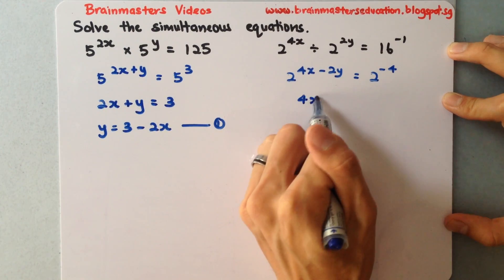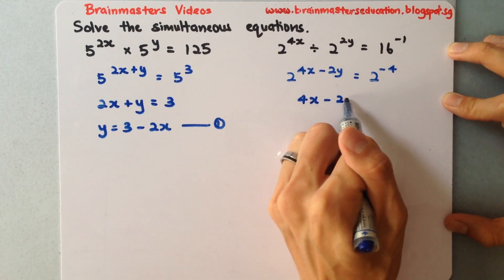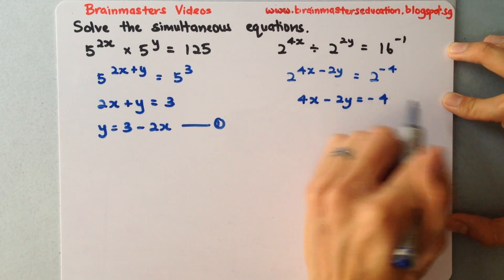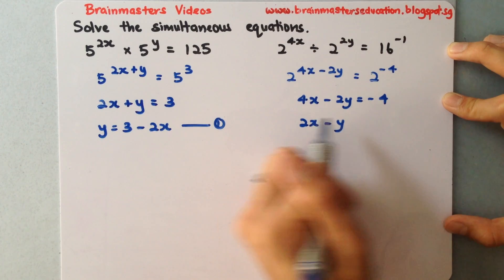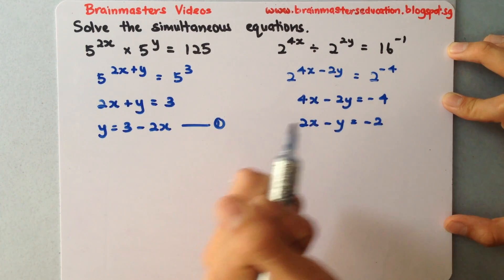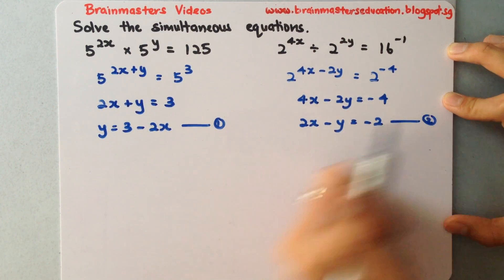So now I'll make this into an equation again. 4x minus 2y equals negative 4. I'll reduce everything by 2. 2x minus y equals negative 2. So this is my equation 2.